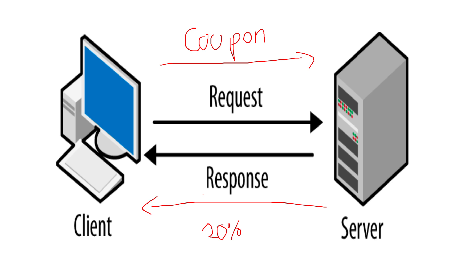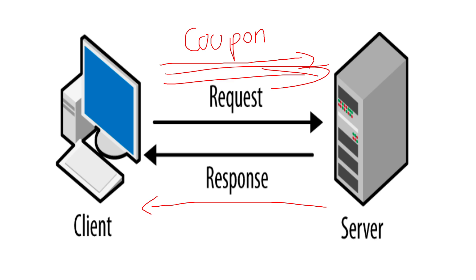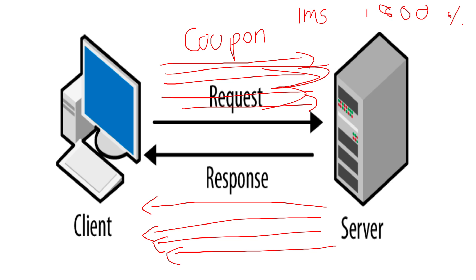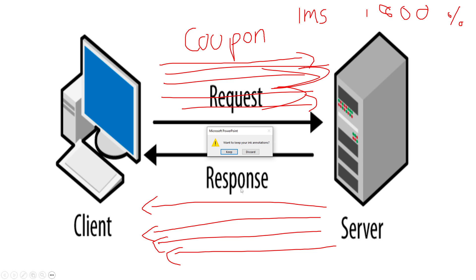If you keep sending the coupon code request multiple times, the discount stacks. You can get a 100% discount — which means the item is free. Unless the server puts a race condition check, a coupon code that should only work one time can be used multiple times. This is the bug you register in a bug bounty report.